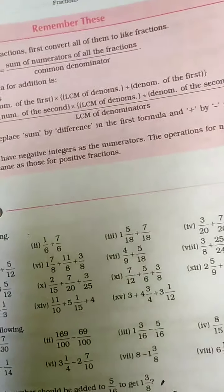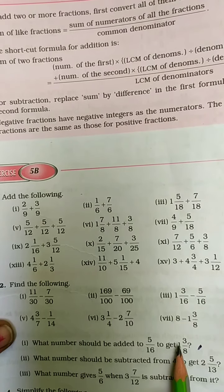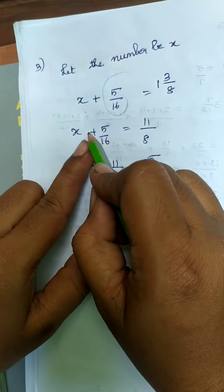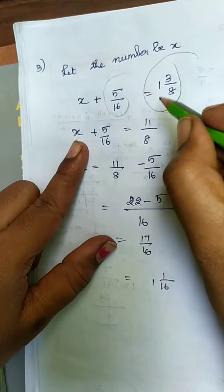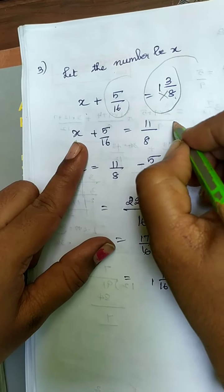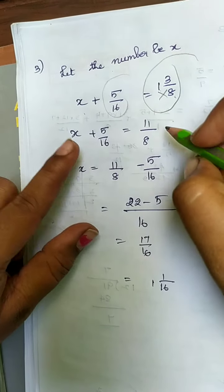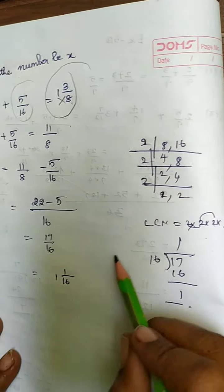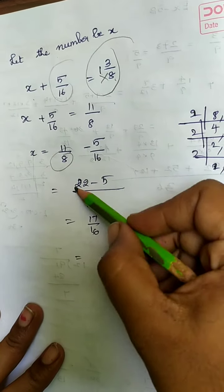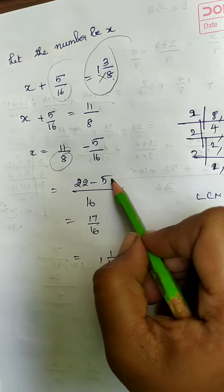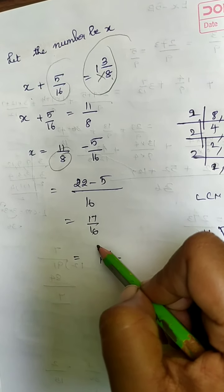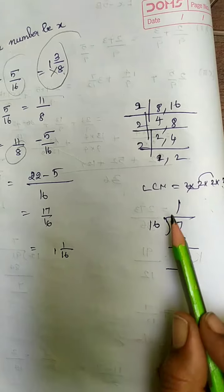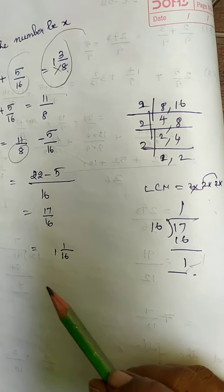Problem number 3: what number should be added to 5 by 16 to get 1 and 3 by 8? The unknown number is x. Convert the mixed fraction to improper: 1 into 8 is 8, plus 3 is 11, so 11 by 8. Taking 5 by 16 to the other side gives minus 5 by 16. Finding the LCM of 8 and 16 is 16. Multiply 11 by 2 over 16, giving 22 minus 5 by 16 equals 17 by 16. Dividing: quotient is 1, remainder 1 — since 1 is not divided by 16, the answer is 1 and 1 by 16.